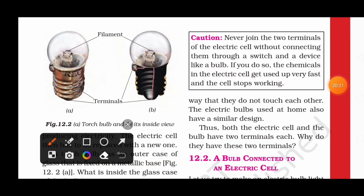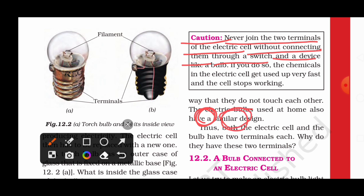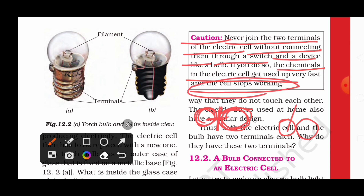NCERT gives one very important note: never join the two terminals of the electric cell without connecting them through a switch and a device. The positive and negative terminals should never be directly joined to each other — they must always be connected through a bulb or a switch. If you do so, the chemicals in the electric cell get used up very fast and the cell stops working.